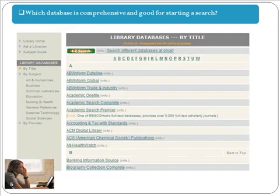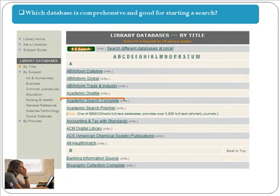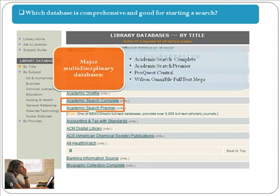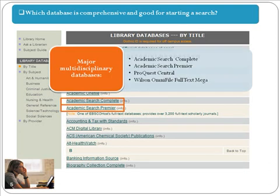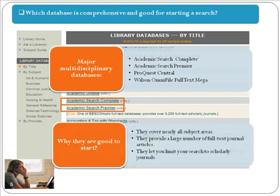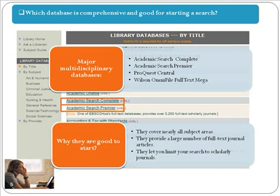It is a good idea to begin your search with a multidisciplinary database like Academic Search Premier or ProQuest Central. Why are they good to start with? Because they cover a broad range of subjects, contain a large number of full-text journal articles, and let you limit your search to scholarly journals.